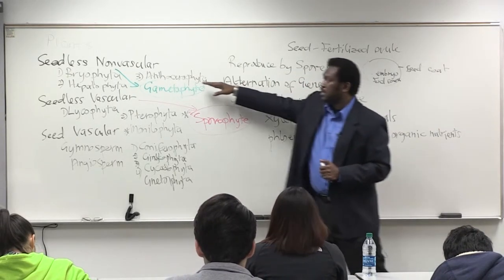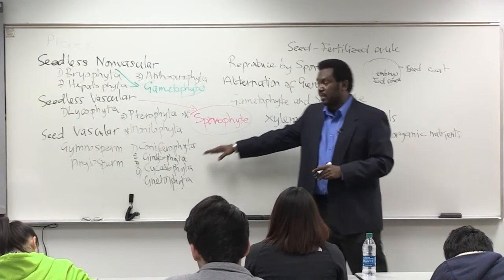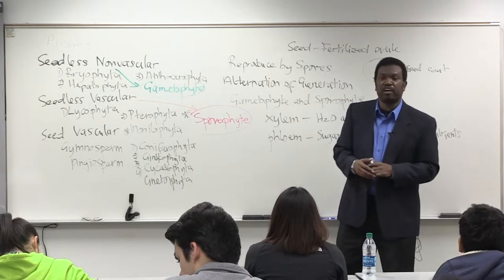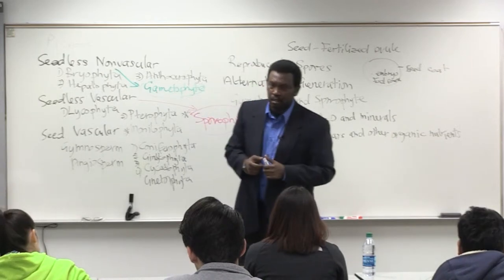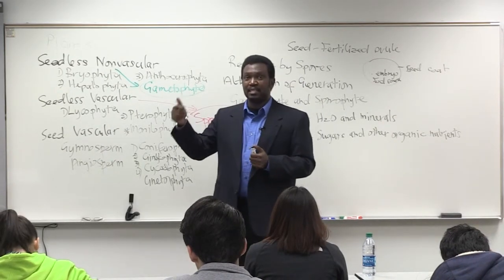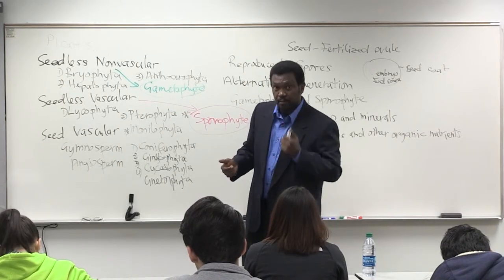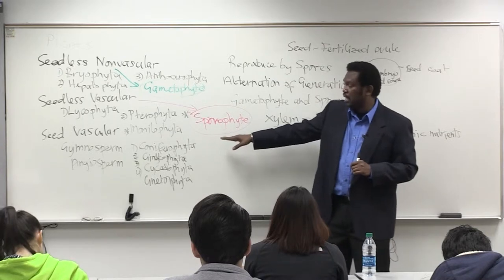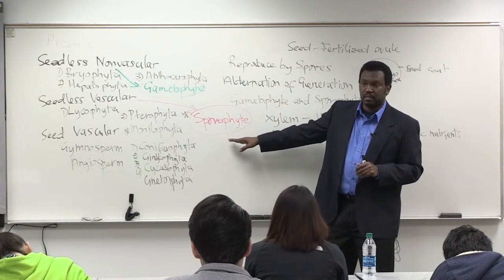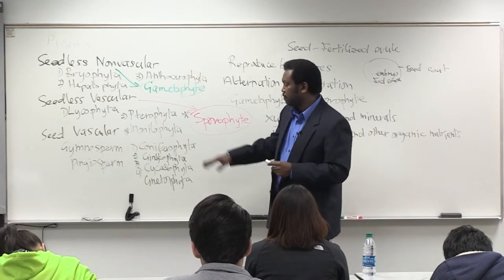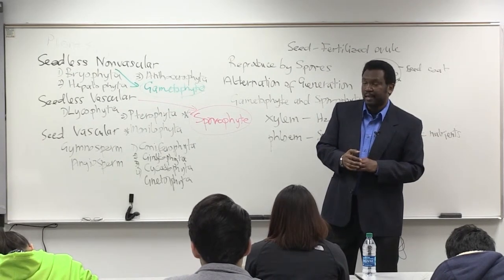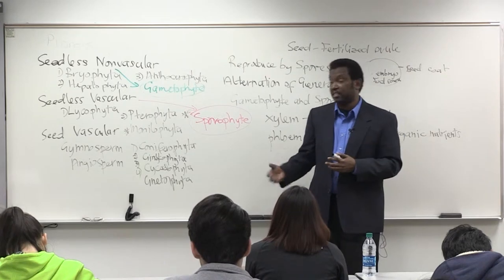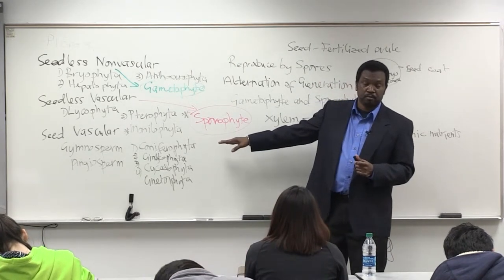We have seedless nonvascular, seedless vascular, and seed plants that dominate in terms of sheer size and numbers. In terms of gymnosperms, these are the record setters on the planet — specifically the Coniferophyta — in terms of size and age. They're the largest plants on the planet. There's a giant sequoia in Sequoia National Forest in California that's 110 meters tall, and some have been recorded to live around 2,500 years.